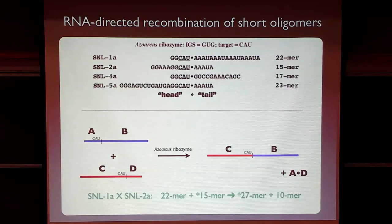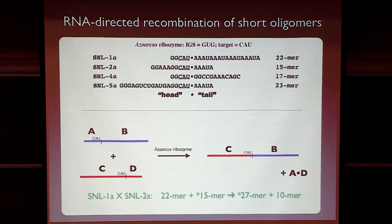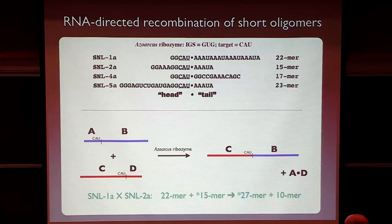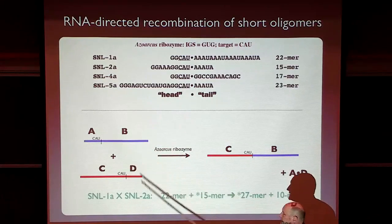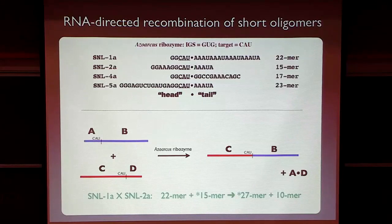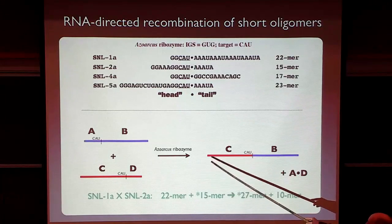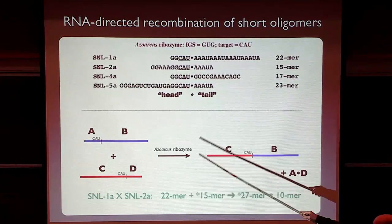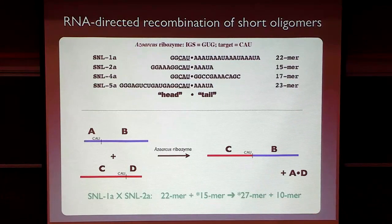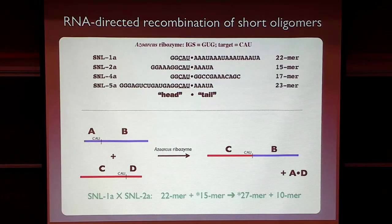And so I can engineer this specificity to my own devious needs. So what we did is, we went in the laboratory, we made synthetic RNAs, A, B, and C, D. We put in this target, CAU, where we wanted them to be recombined. We threw in the azoarchus ribozyme, and sure enough, it can recombine pretty much any two substrates to make the recombinant products.